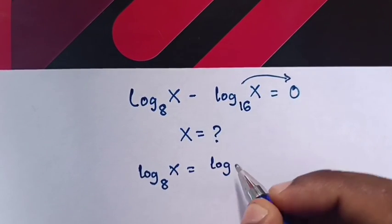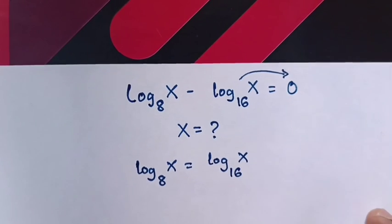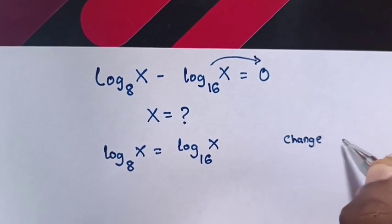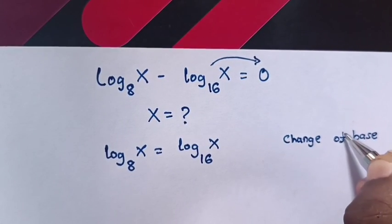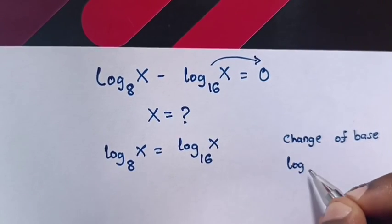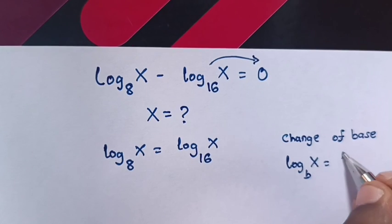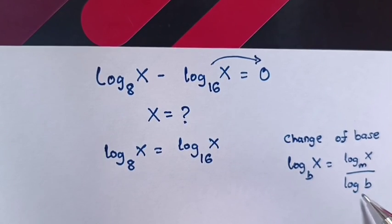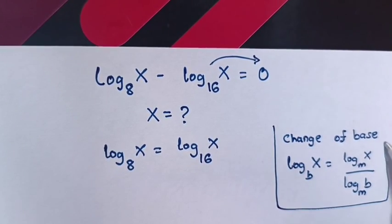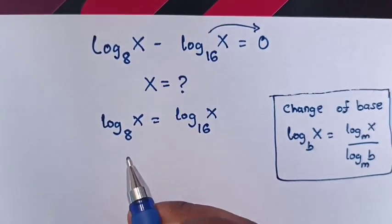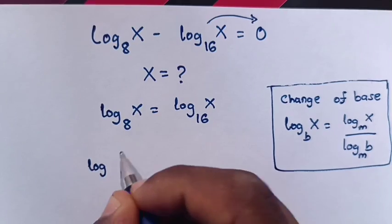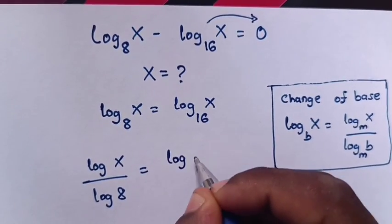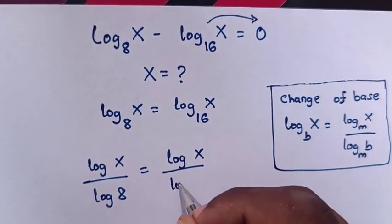Now from here we will use the logarithmic rule of change of base, where log x base b is equals to log x base m over log b base m. So in our equation it will be log x over log 8 is equals to log x over log 16.